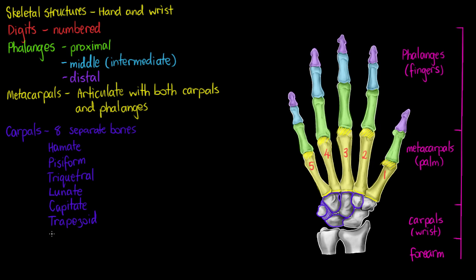On the outer border of the carpals we have our trapezium. The trapezium being the carpal that articulates with the metacarpals that lead to our thumb. Right there.